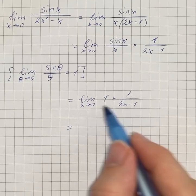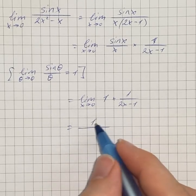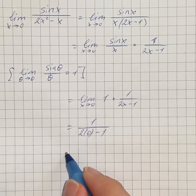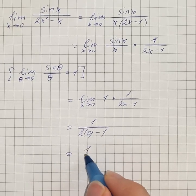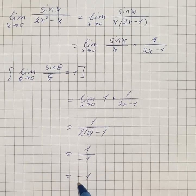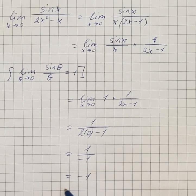So now we can substitute x equals 0. We get 1 over 2 times 0 minus 1. So that's going to be 1 over negative 1 or just negative 1. And the value of the limit is negative 1.